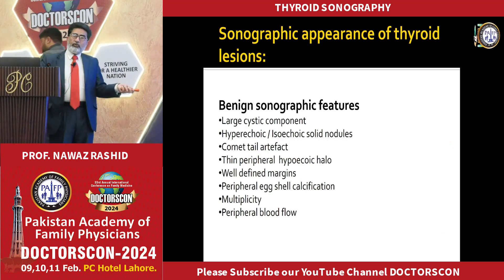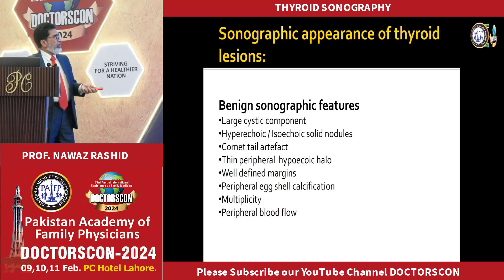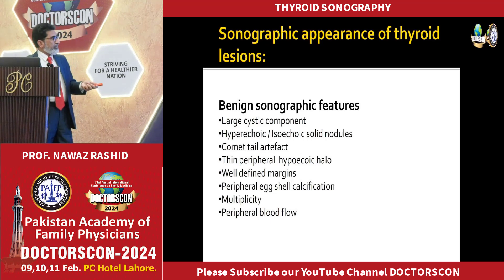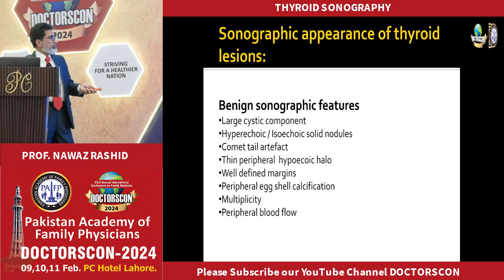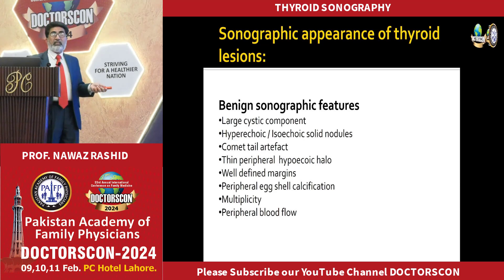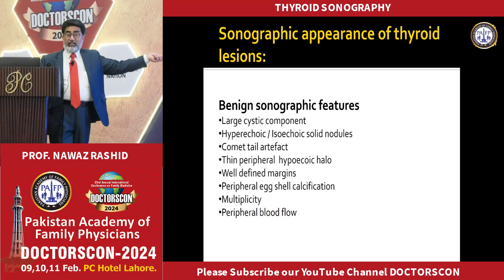If you look at benign pathology — benign nodules — you will see a large cystic component, a microchip pattern, isoechoic nodules with a comet-tail sign. These are the characteristics of benign nodules.